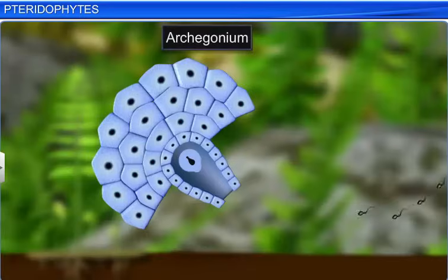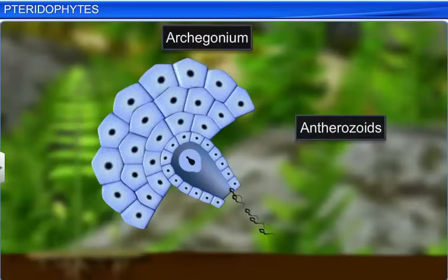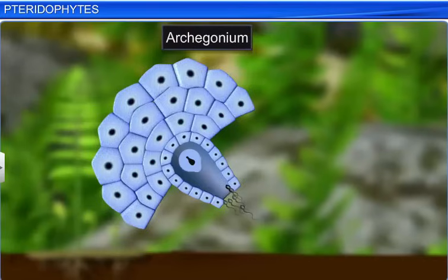When released, anthrozoids travel through water and eventually reach the mouth of the archegonium, where each one fuses with an egg to form a zygote.